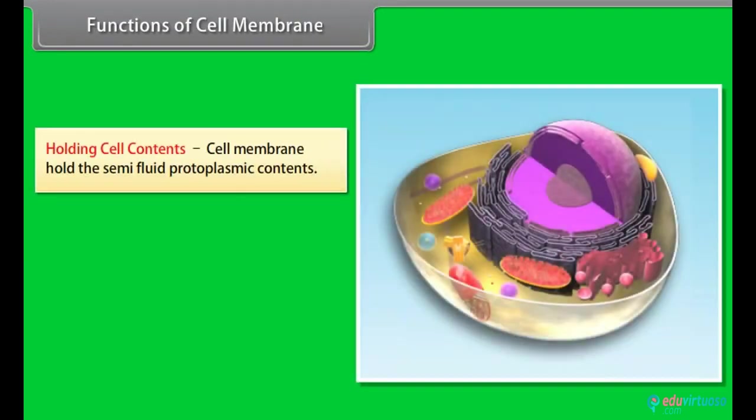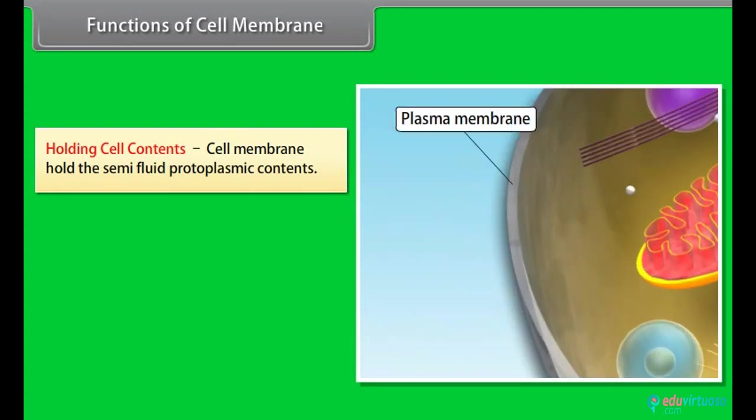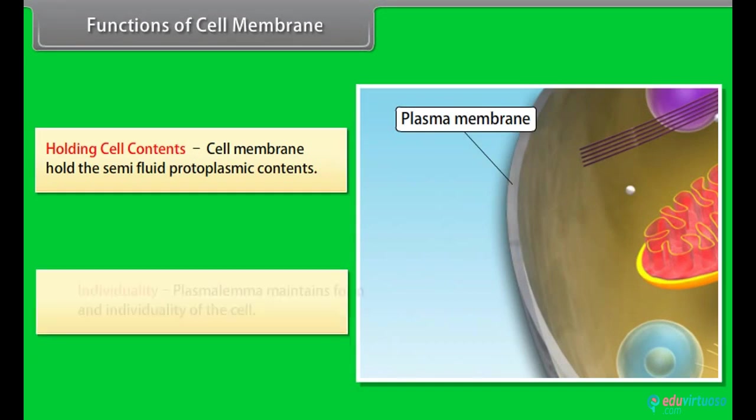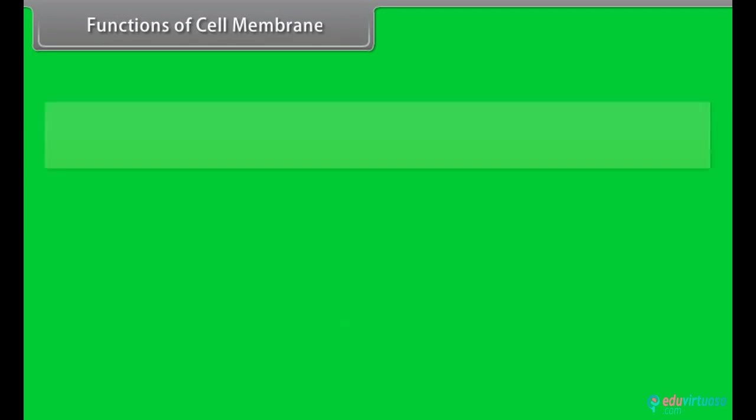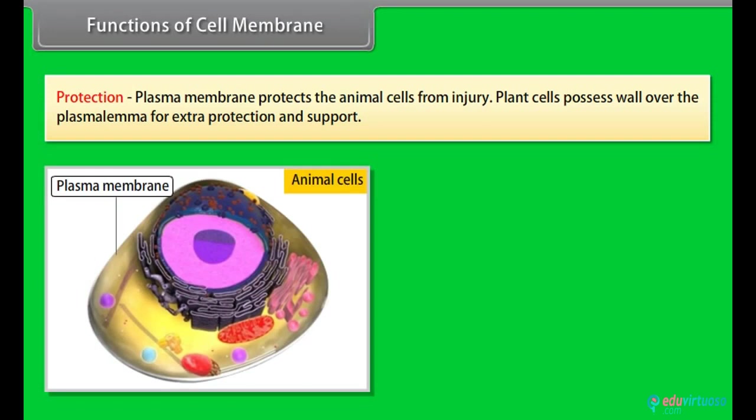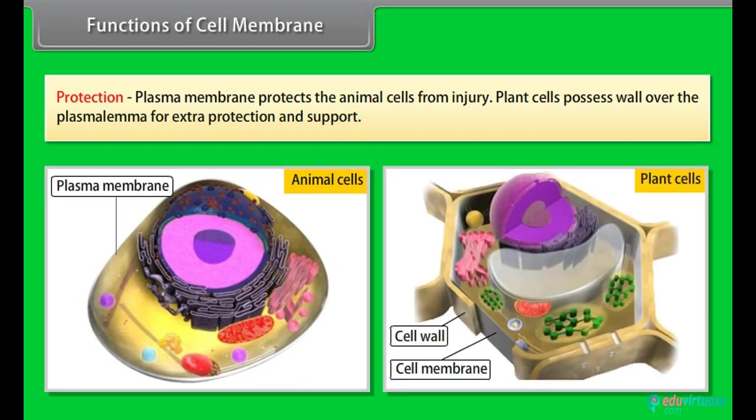Functions of cell membrane: Holding cell contents - cell membrane holds the semi-fluid protoplasmic contents. Individuality - plasma lemma maintains form and individuality of the cell. Protection - plasma membrane protects the animal cells from injury. Plant cells possess wall over the plasma lemma for extra protection and support.